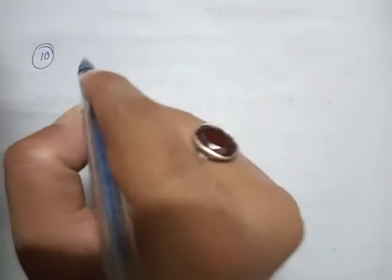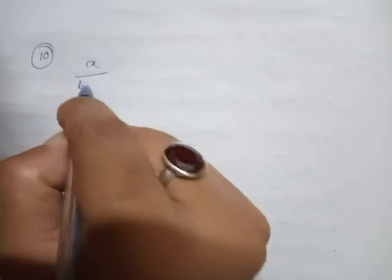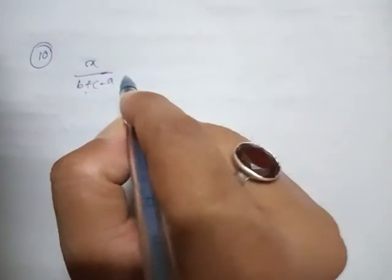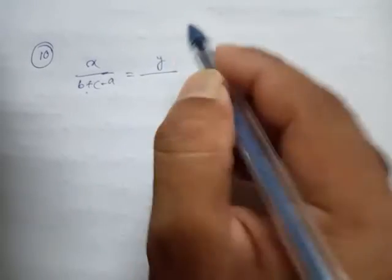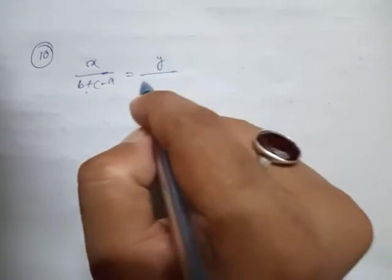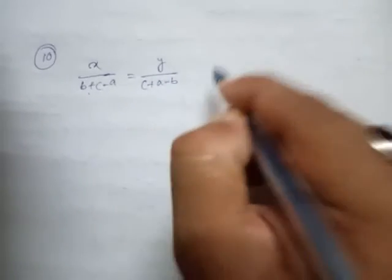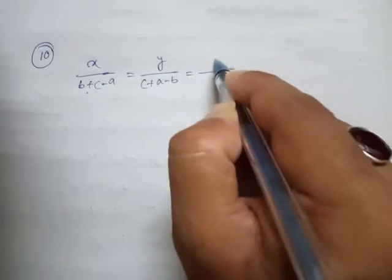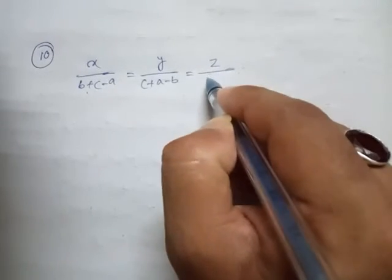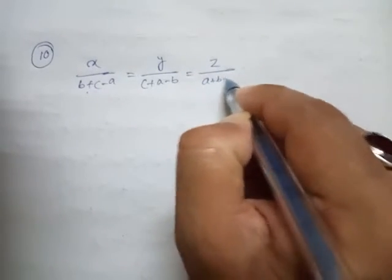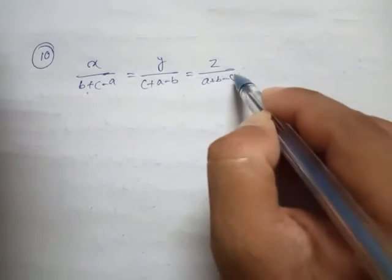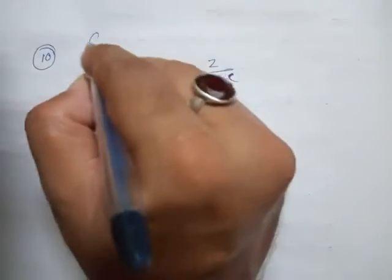Solution of Question number 10, Class 8 Advancements, Exercise 3A. The given part is: x by (b plus c minus a) equal to y by (c plus a minus b) equal to z by (a plus b minus c).